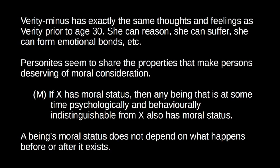What happened after Verity minus ceased to exist is that there was a continuation of bodily and psychological continuity — that's why we say Verity minus is not a person. But Verity minus seems to have all of the properties important to moral status. She has exactly the same thoughts and feelings as Verity prior to the age of 30. Verity minus can suffer, reason, experience joy, and hope and fear for her future. In some sense we might say personites are more fundamental than persons, because persons are made up of personites. The only way a person can suffer or reason or act is because of what the personites that make them up do.